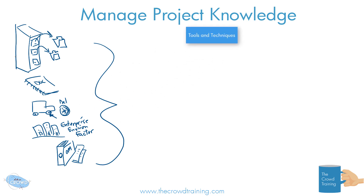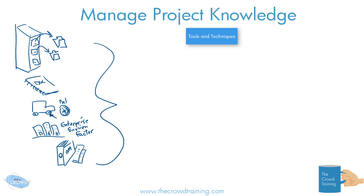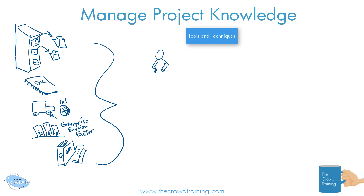Now, how we manage the knowledge of the project: if you think about your project, there's a lot of things to know, a lot to learn, a lot to explain, a lot to take in and transfer. How you go about doing that is probably going to depend on the project itself — what you know and what the others on your team and other stakeholders know. So there's going to be some expert judgment. I'll draw somebody being able to think about, translate, and manage that knowledge — that's your expert judgment.